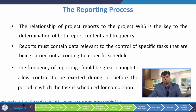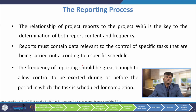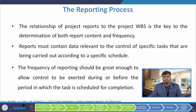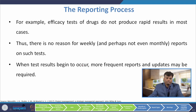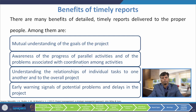The relationship of project reports to the Work Breakdown Structure is the key to determining both report content and frequency. Reports must contain data relevant to the control of specific tasks being carried out according to a specific schedule. The frequency of reporting should be great enough to allow control to be exerted during or before the period in which the task is scheduled for completion. For example, efficacy tests of drugs do not produce rapid results, so there is no reason for weekly or even monthly reports on such tests. When test results begin to occur, more frequent reports may be required.